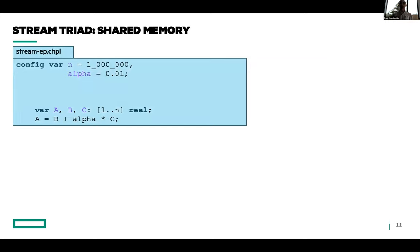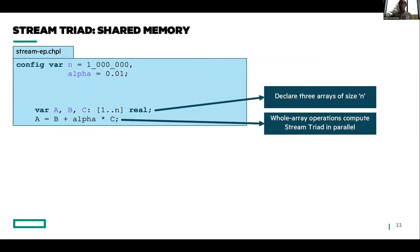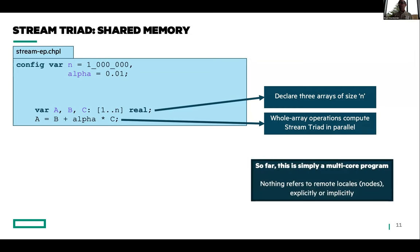This is one of those two benchmarks I showed you—stream triad. We're basically going to declare three arrays. We're then going to multiply one of the arrays by a scalar, add it to a second array, assign it to a third array. And as I've written this, this is basically a multicore program. If you ran this on a 64-core AMD, you'd use all 64 cores. But if you ran it on that large Frontier system, you'd never leave that first compute node that you started running on because nothing we've done here refers to those remote nodes or locales as we call them in Chapel.